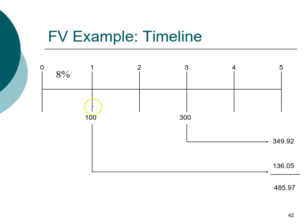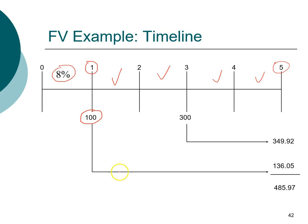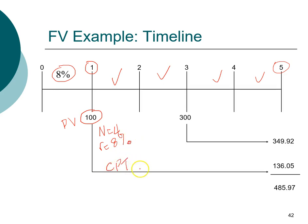One strategy to solve this problem faster is to look at the two cash flows separately. The first cash flow is $100 received in year one. We leave this money in the bank until year five — between year one and year five there are four years (five minus one equals four). So we leave $100 in the bank for four years earning 8%, and compute the future value at the end of year five, which gives $136.05.